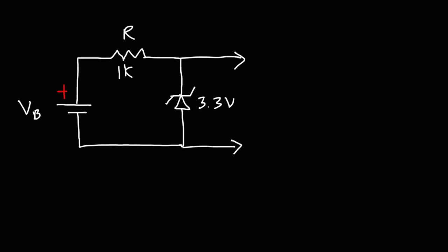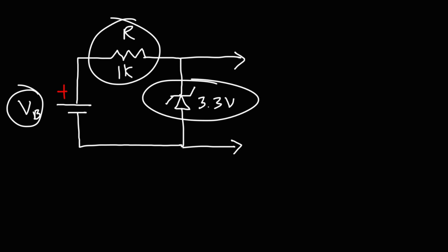In this video, we're going to talk about how to make a voltage regulator using a zener diode and supercapacitors. This particular circuit has a battery, a 1 kilohm resistor, and a 3.3 volt zener diode.